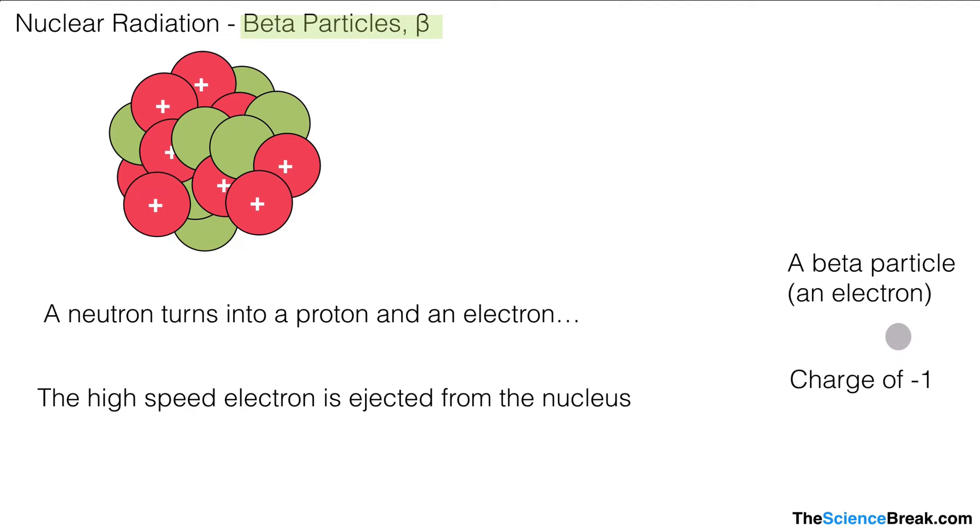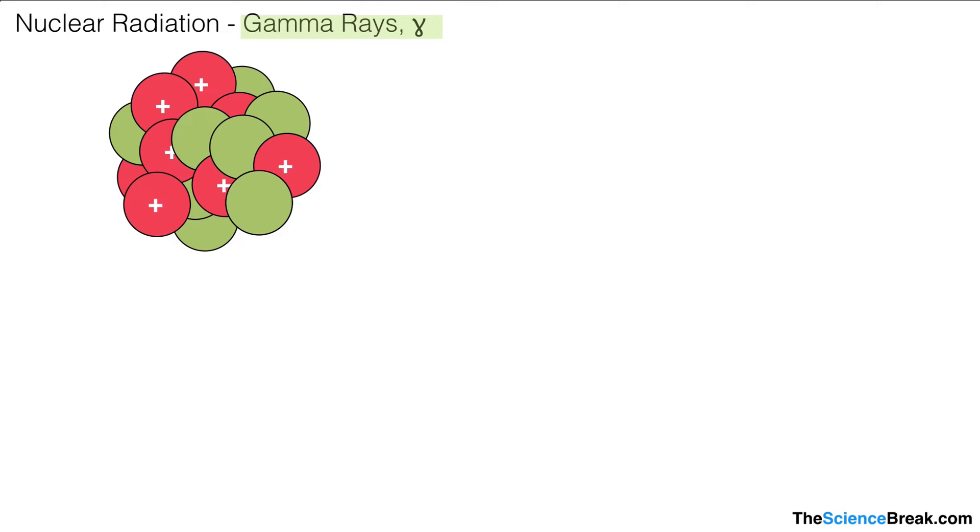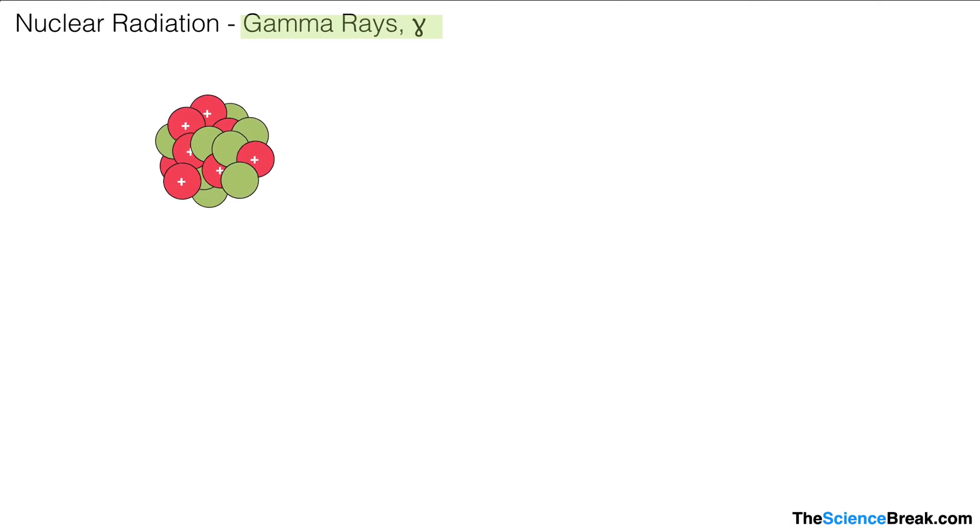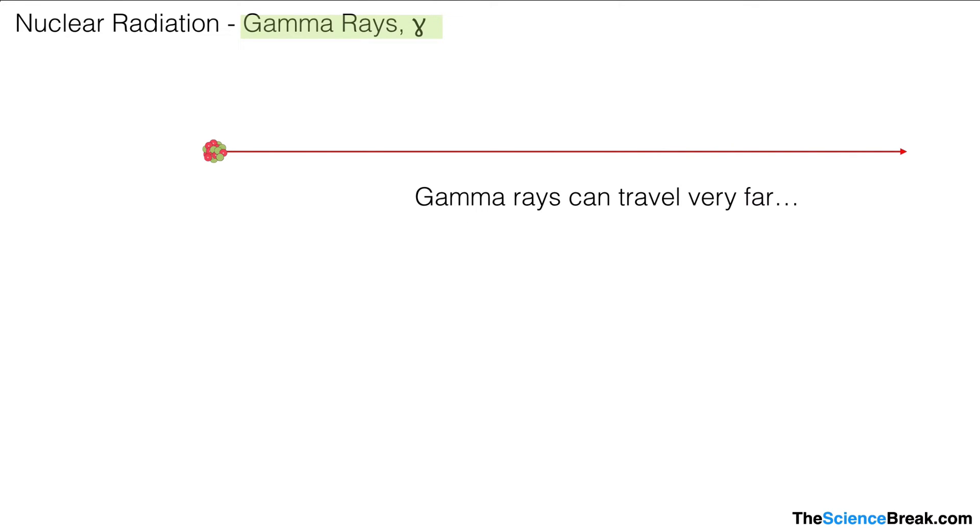We can also have another type of nuclear decay, and this is when an unstable nucleus will give out a gamma ray to become more stable. The nucleus gives out a gamma ray, and in fact, if you remember, a gamma ray is electromagnetic radiation given off from the nucleus. If we zoom out, we can actually see that electromagnetic radiation, the gamma ray, can travel very, very far.